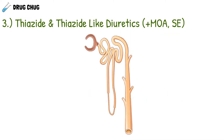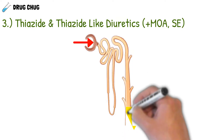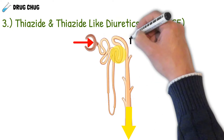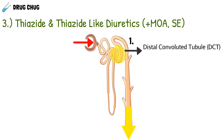Let's take a closer look at the nephron. Blood enters the capsule, gets filtered, and urine eventually exits. The distal convoluted tubule is located here. Normally our body tries to hold on to sodium chloride and water. What thiazides do is prevent the reabsorption of sodium chloride and water back into the blood at the DCT — so there's more sodium in the tubule, water follows, and we urinate it out.